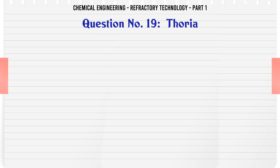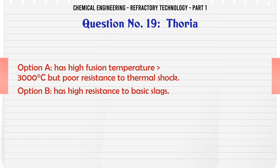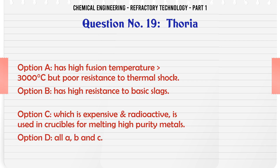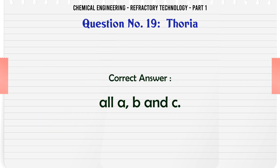Thoria: A. Has high fusion temperature of 3000°C but poor resistance to thermal shock, B. Has high resistance to basic slags, C. Is expensive and radioactive, used in crucibles for melting high purity metals, D. All A, B and C. The correct answer is All A, B and C.